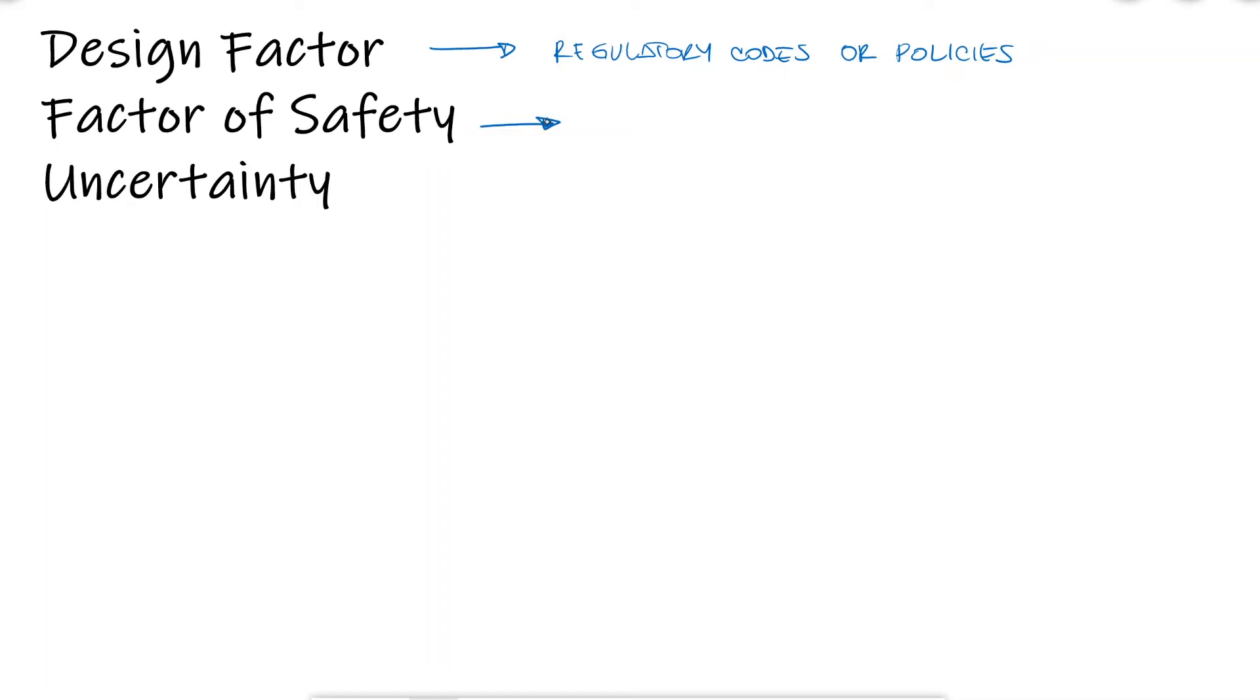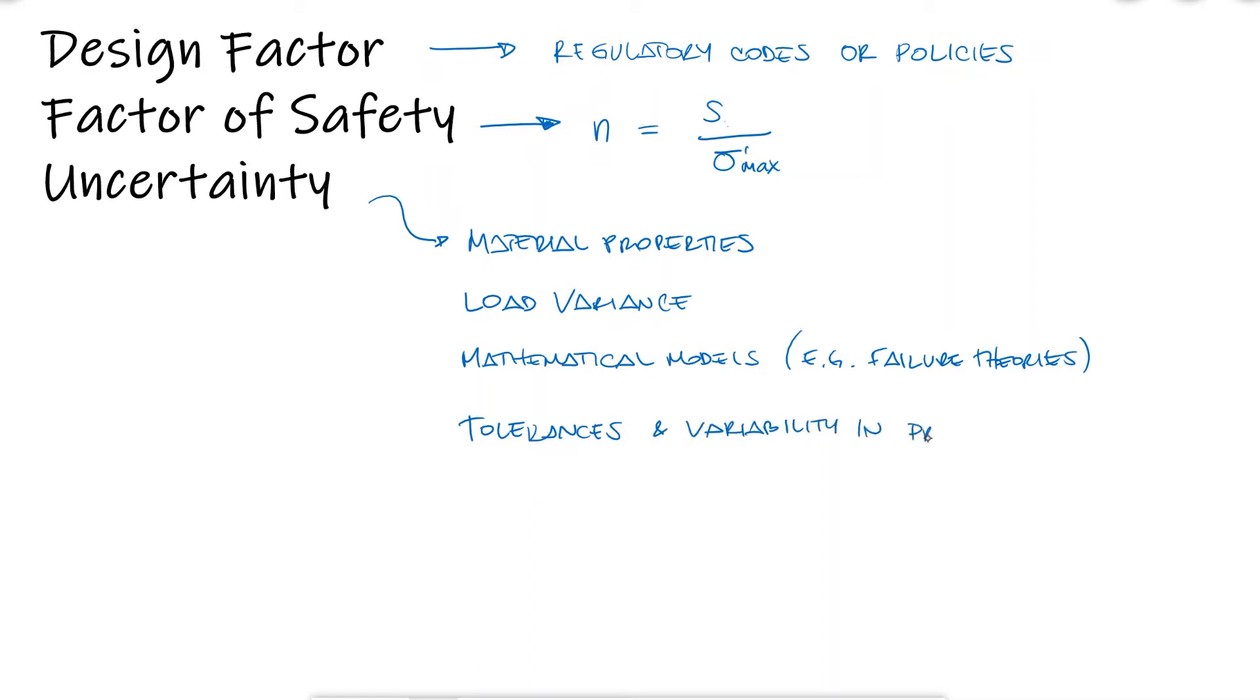The factor of safety is usually the ratio between the strength and the maximum stress that the intended load and overall operation generates. Accounting for uncertainty is, for that reason, the key element when it comes to calculating the design factor. Uncertainty affects everything, from the properties of your material, the variability of the loads, the math models you're using, to even the dimensions of your components, specifically the tolerances of the components you buy or machine yourself.